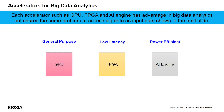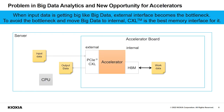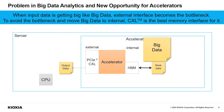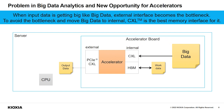Each accelerator such as GPU, FPGA, and AI engine has advantages in big data analytics — for example, general purpose, low latency, and power efficiency, respectively. However, all accelerators share the same problem of accessing big data. In a typical server with an accelerator board, the accelerator accesses input and output data via an external interface like PCIe or CXL, while work data tends to be stored on HBM or DRAM inside. When input data grows large, the external interface becomes a bottleneck. To avoid it, big data should be moved from external to internal storage and accessed via an internal memory interface. CXL is the best memory interface for accelerators supporting any kind of memory type.